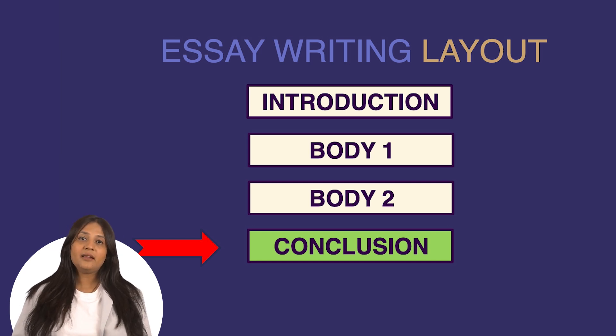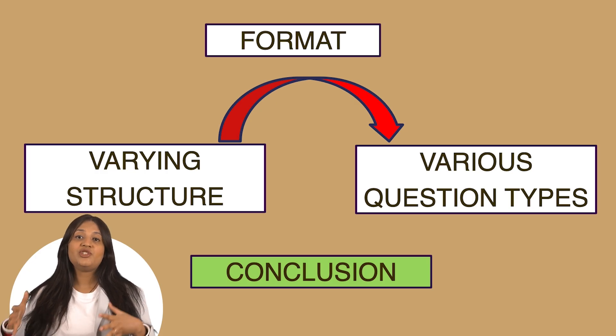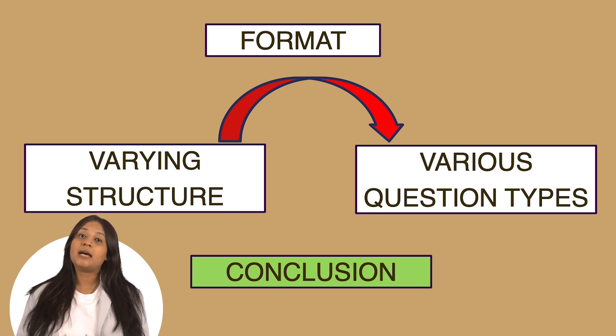An important thing to understand here: the structure of the conclusion changes according to the task type. To illustrate, an opinion-based question will have a different written conclusion than an argumentative essay type. But the motive of the conclusion remains the same, which is to summarize the essay. In the upcoming videos, we will provide you with a very easy-to-follow essay format and paragraph structure for each essay question type, so you don't need to worry about varying the structure of the conclusion. In this video, we will take a look at the fundamental layout of the conclusion.